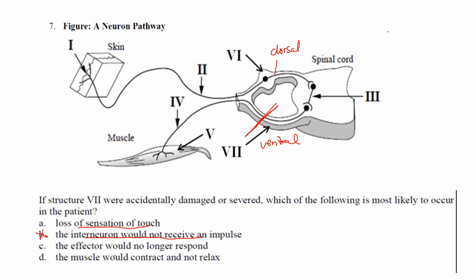It says the effector would no longer respond. So this is the effector right here, the muscle. That sounds pretty good. And this one says the muscle would contract and not relax. Well, if there's no message because the ventral root is severed, there's no way that you're going to get the message to the muscle to contract. So that can't be true here.